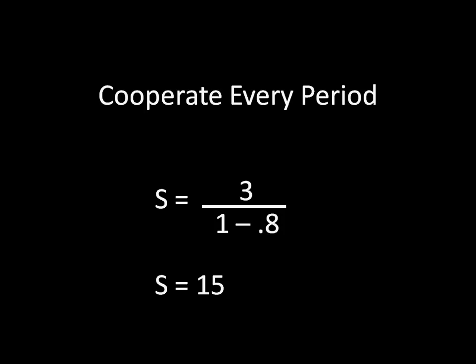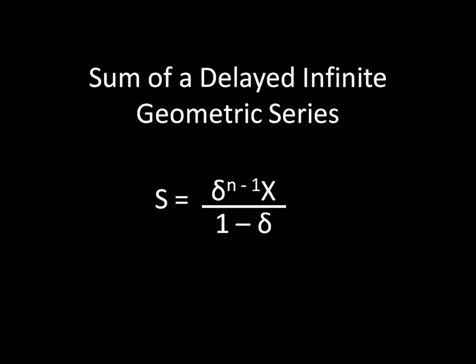For example, what is my payoff for mutual defection in the fifth period forward? Essentially, we want to ignore the first four periods and see what happens after and only what happens after, not what happens before. And the formula we use for this looks like that. We keep the denominator the same, 1 minus delta. For the numerator, we take the delta, raise it to the number period we were looking at, minus 1, and multiply it by x.